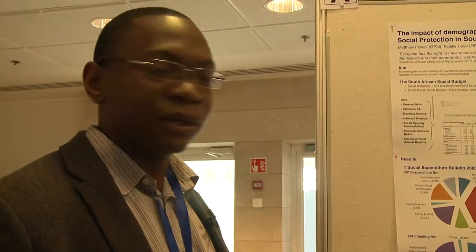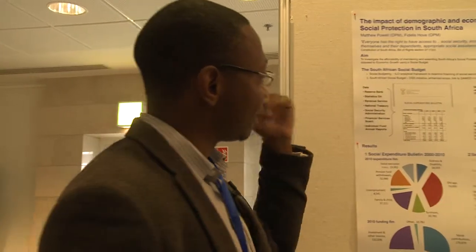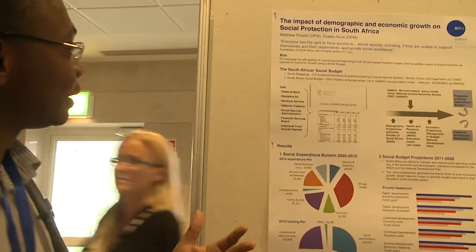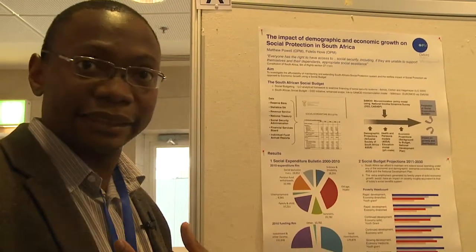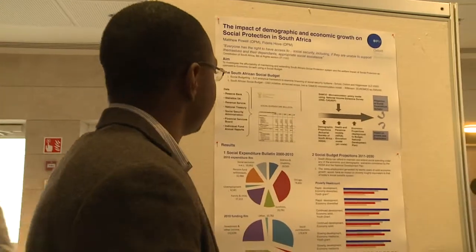With those policy questions in mind, the Department of Social Development, which is responsible for delivering social benefits in South Africa, is consistently looking for tools and ways to analyze these questions. So they approached the ILO — the International Labour Organization — and the ILO advised them to create a social budget. The ILO and the Department of Social Development then approached us to assist with creating that social budget.